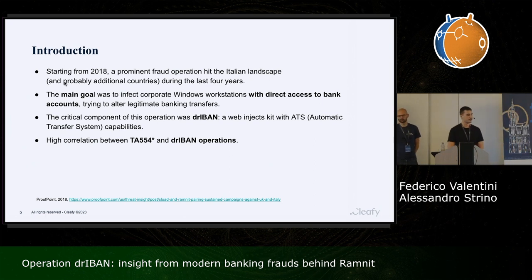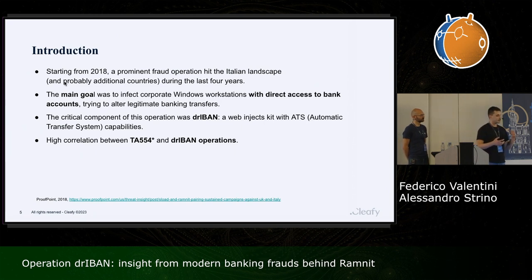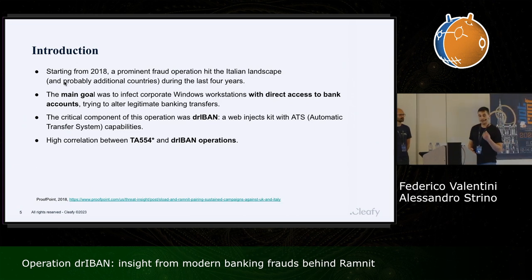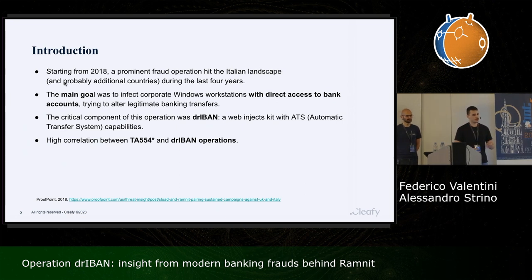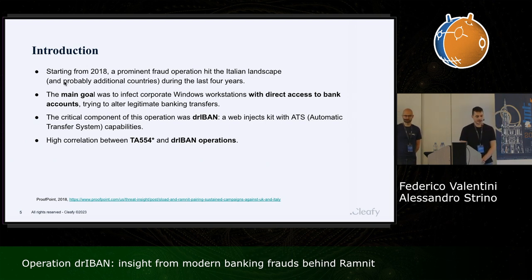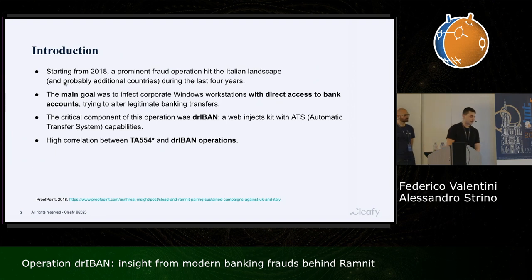This Web Inject kit uses a scenario called ATS, or Automatic Transfer System, which doesn't extract credentials or two-factor authentication codes. Instead, it waits for a victim to log into their corporate banking account and activates when the victim tries to insert a legitimate banking transfer, hijacking the payment and routing it to another banking account controlled by the threat group. We also found strong correlation between these Driban operations starting in 2018 and a threat group disclosed by Proofpoint in 2018 called TA554.